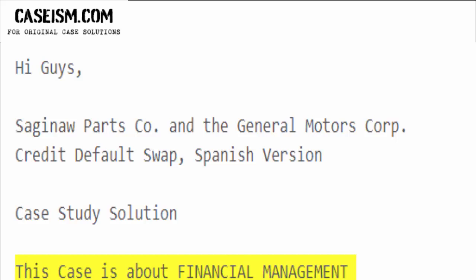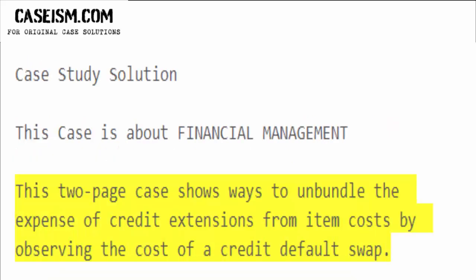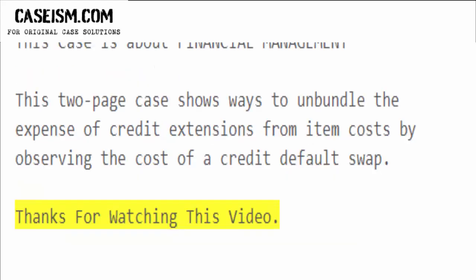This case is about financial management. This two-page case shows ways to unbundle the expensive credit extensions from item costs by observing the cost of a credit default swap. Thanks for watching this video.